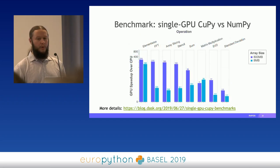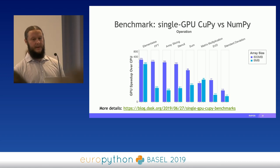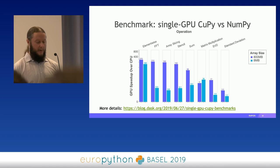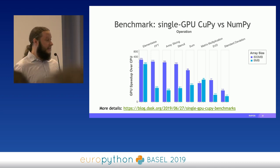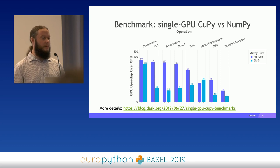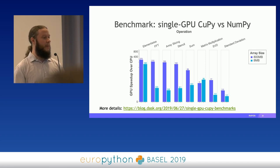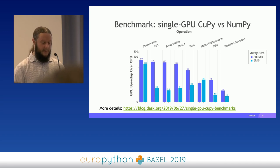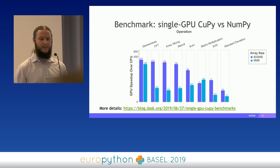Here are some benchmarks for CuPy on a single Tesla V100 versus NumPy. We see different gains depending on the nature of the operation, ranging from 270x speed-up for element-wise computation — which is very compute-bound — down to about 17x for SVD, which is more communication-bound. That is still a very decent speed-up. There's a blog post with all the details and instructions on how to reproduce these tests if you're interested.